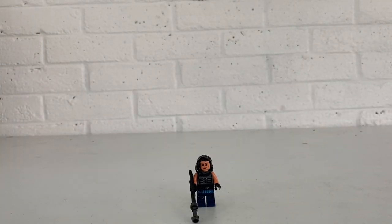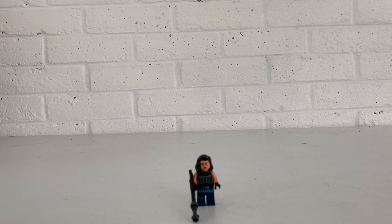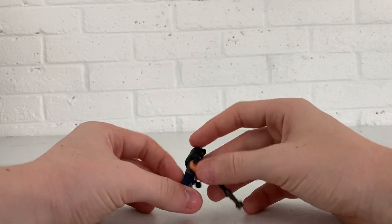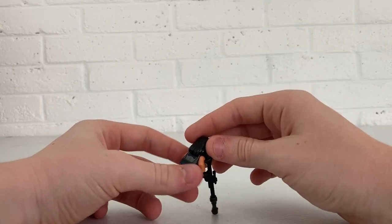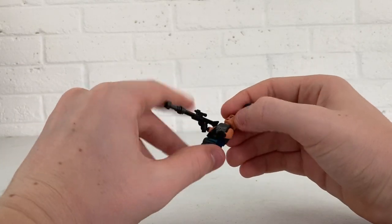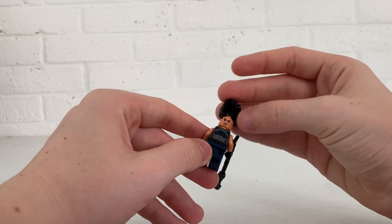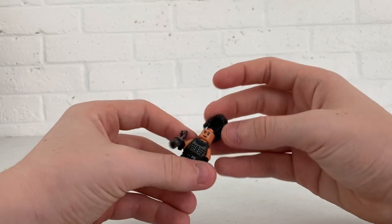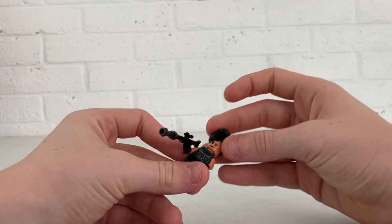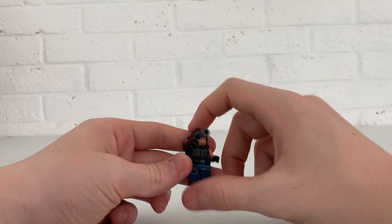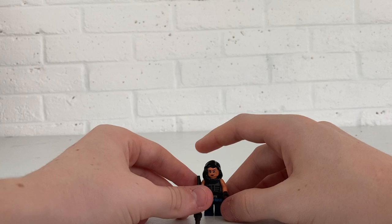Here we have our second minifig, this is Cara Dune. As I said in my Imperial Light Cruiser review, this is the same exact minifigure. I'm pretty sure it's the same expressions, it might be different on the back, but it's the same hair, same gun, same printing, same pieces everywhere. Nothing different about this Cara Dune.